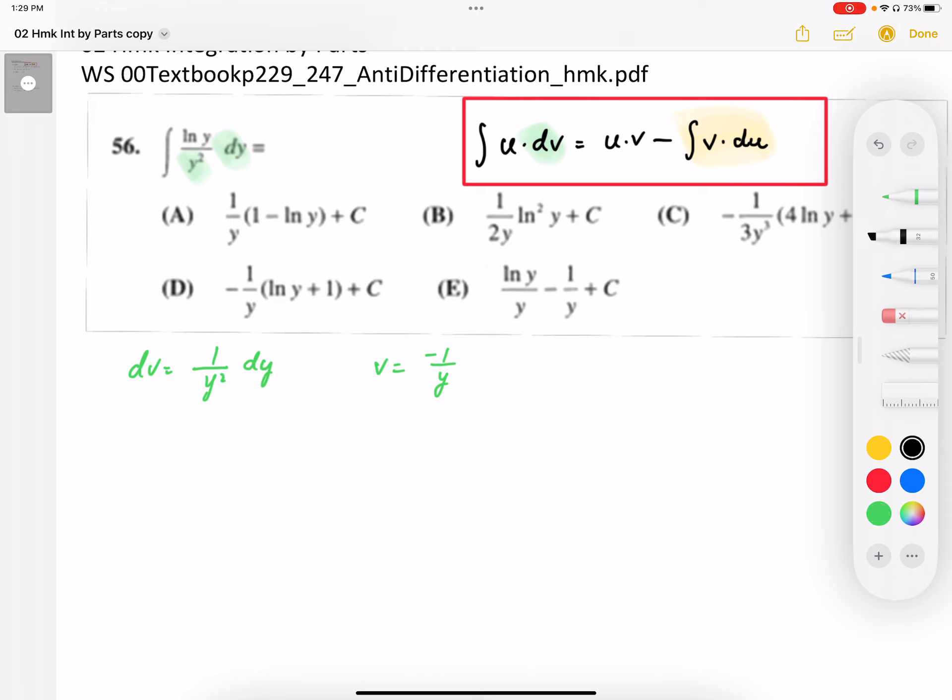Looking at the other parts here, the other part left over is going to be our u. So we're going to let u equal log y. And then from that part we need to generate the du part. We differentiate that expression; we get one over y, and then we just move the dy part over.